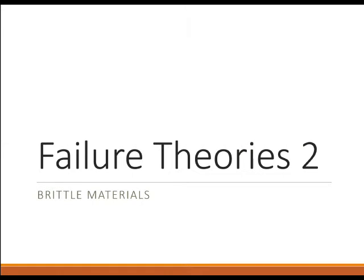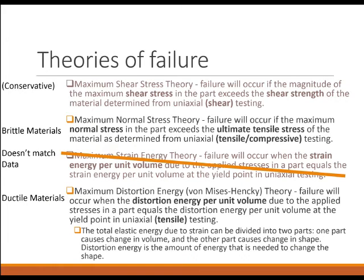In this lecture, we will consider failure theories, and in particular how the theories can relate to brittle and ductile materials. As a quick review, last time we spoke of the maximum distortion energy, the von Mises theory, and we looked at how the application of this theory matches facts very well for ductile material. We also mentioned the maximum normal stress theory, which appears to work well for brittle materials, and the maximum shear stress theory, which seems to be conservative. Today we're going to look at how it relates with the maximum distortion energy theory.